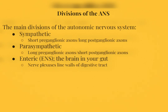The sympathetic and parasympathetic nervous systems are main divisions of the ANS. The sympathetic nerves have short preganglionic axons but long postganglionic axons, while parasympathetic nerves have long preganglionic axons but short postganglionic axons. There is also the enteric nervous system, another main division of the ANS. There are nerve plexuses in the digestive tract that regulate smooth muscle contraction and gland secretion, but we won't focus on that today.